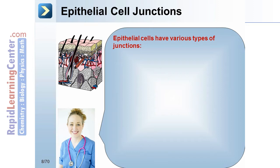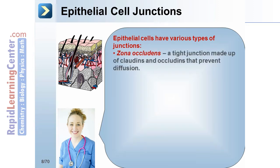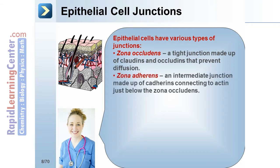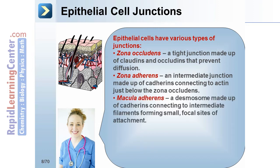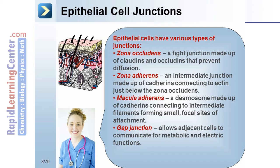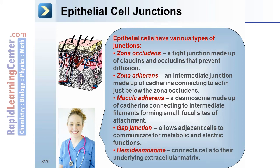Epithelial cells have various types of junctions. The zona occludens is a tight junction made up of claudins and occludins that prevent diffusion. Zona adherens is an intermediate junction made up of cadherins connecting to actin, just below the zona occludens. The macula adherens is a desmosome made up of cadherins connecting to intermediate filaments, forming small focal sites of attachment. Gap junctions allow adjacent cells to communicate for metabolic and electric functions. The hemidesmosome connects cells to their underlying extracellular matrix.